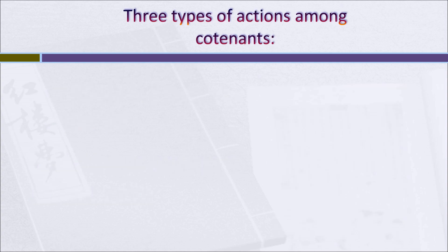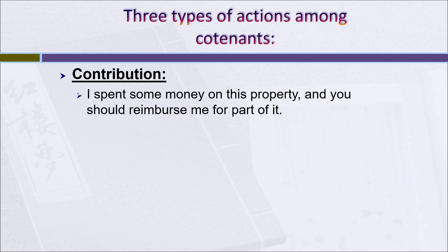There are three types of actions among co-tenants that we're going to talk about on this slide. They have technical names, and we'll see what each of those names mean. The first is called an action for contribution. What it says is: I spent some money on this property, and you, my co-tenant, should reimburse me for your share of the money that I spent.